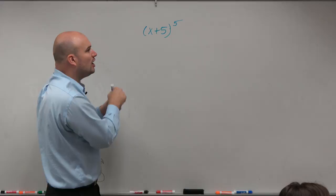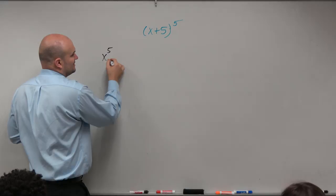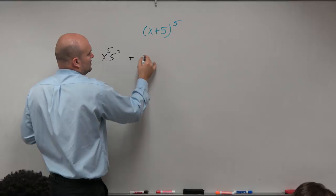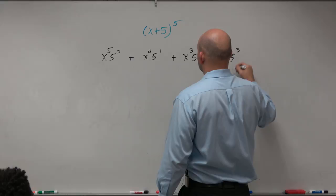So automatically, what I'm going to do is I'm just going to create a set of binomials. So I know that my first term is x to the fifth, 5 to the 0. Right? Well, we're using 5 instead of y this time. Then I'm going to have plus x to the fourth, 5 to the first, plus x cubed, 5 squared,